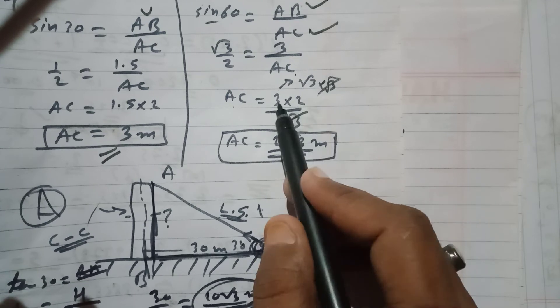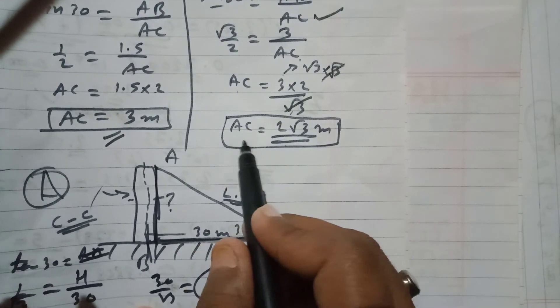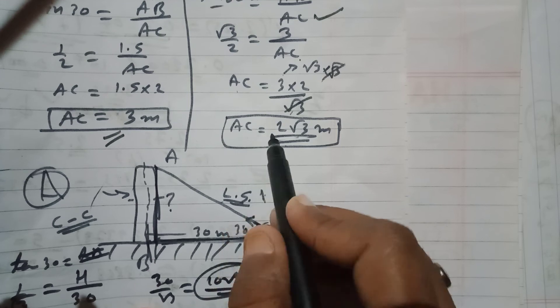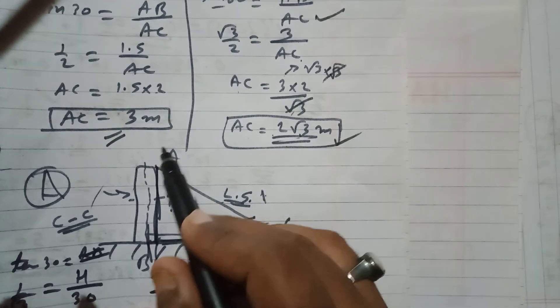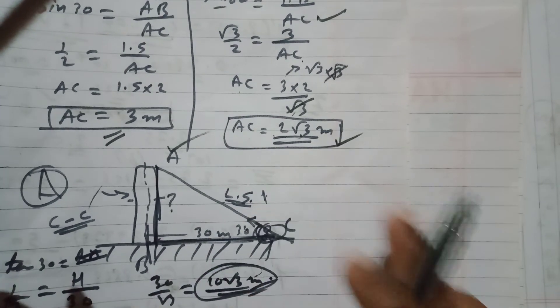So over here it will be root 3 and 2. Your answer is going to be AC is equal to 2 root 3 meters. So we got the answer. Bye!